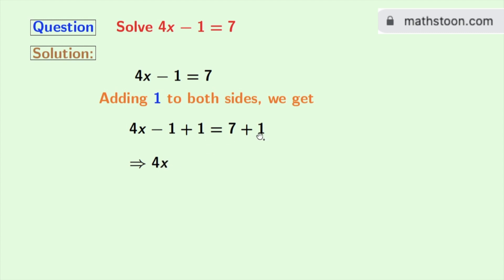And as 7 plus 1 is 8, we have 8 in the right hand side. So finally we get 4x is equal to 8.